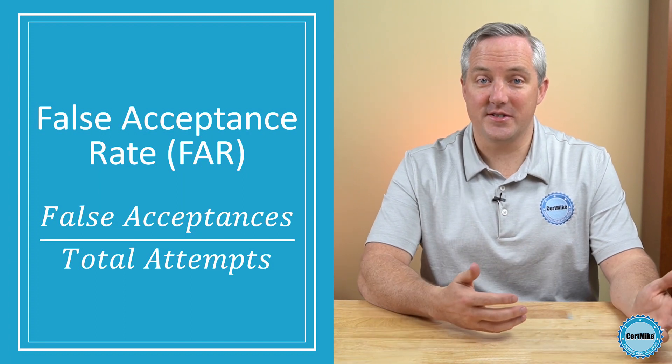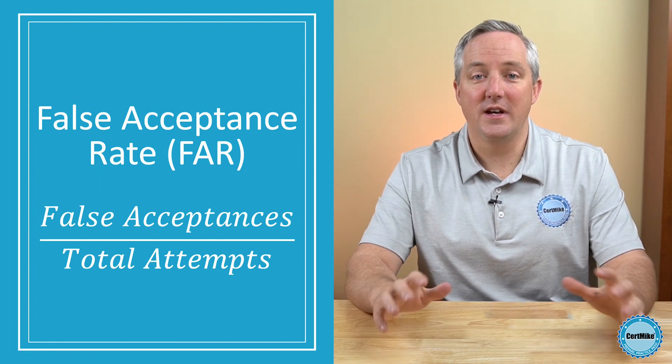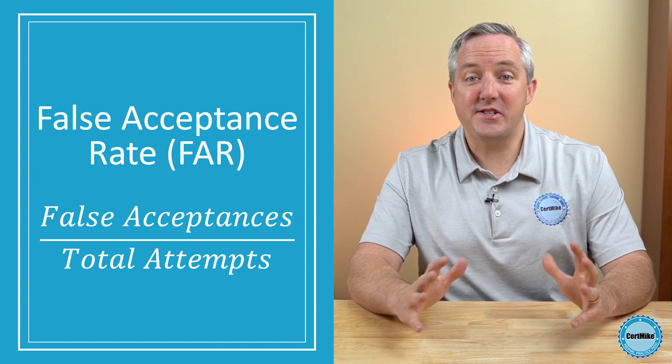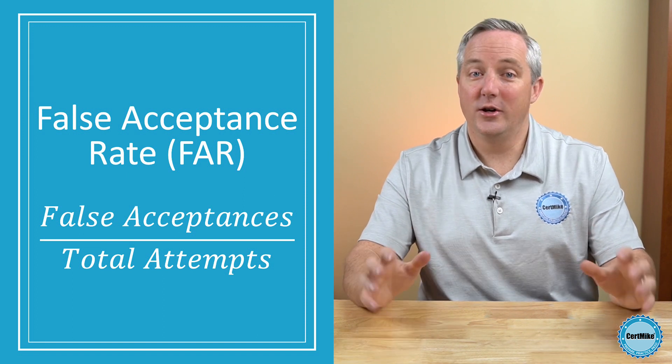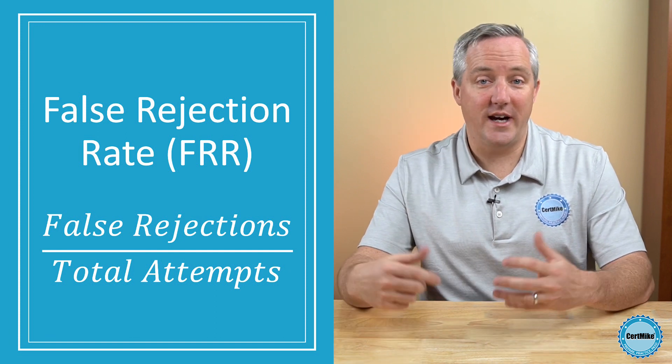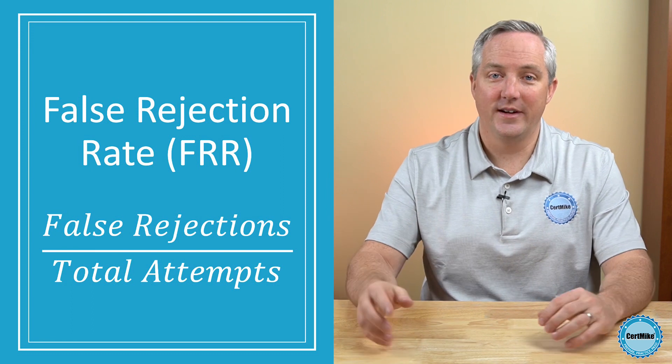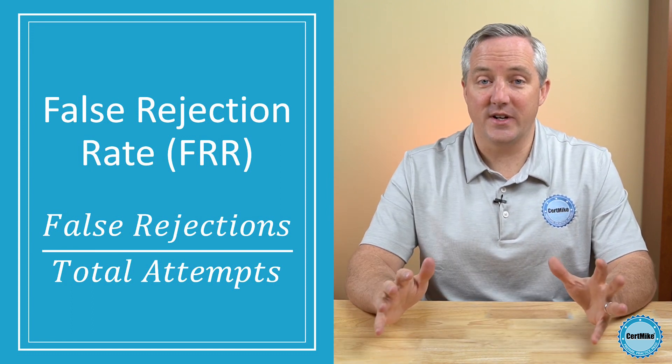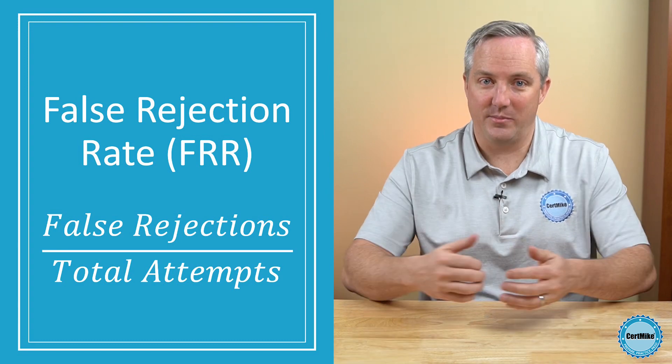When we're testing a system, we can measure the number of times that these errors occur and use those measures to talk about the error rate of the system. If we take the number of false acceptances and divide it by the total number of access attempts, we get the false acceptance rate, or FAR — the percentage of time that the system accepts someone who it should have rejected. Similarly, if we take the number of false rejections and divide that by the total number of access attempts, we get the false rejection rate, or FRR — the percentage of time that the system rejects someone that it should have accepted. Now, the FAR and FRR tell us part of the picture, but neither one of them is the best way to evaluate a biometric authentication system.